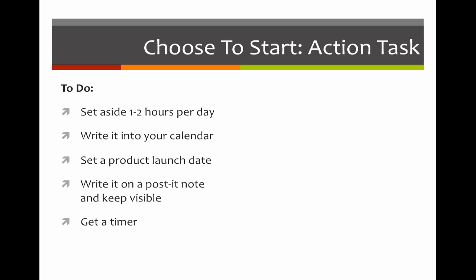Excellent. And finally, I need you to get one tool which you're going to need for the course — get a timer. I know I'm a little timer obsessed, but believe me, it gets it done. If you have a smartphone, there probably already is one built in and that's what you will use. You will note that with these action tasks, we always have a to-do and then we also have an outcome. In our case, the outcome should be a product timeline. So you're going to know which days you're going to work on it and you will have a launch date already determined — that actually gives you your timeline. And more importantly, what you will have is a ready mindset, because you've at least thought through how you are going to set aside this time to work on your product. You are now ready to go.